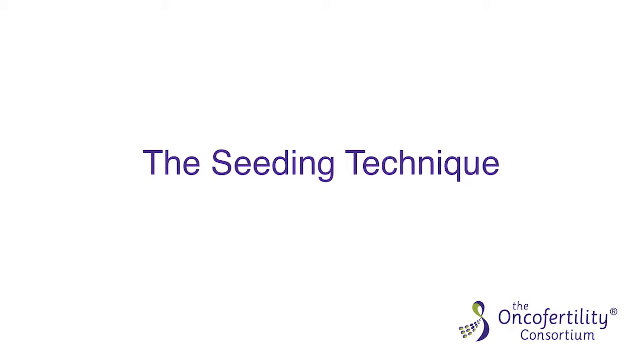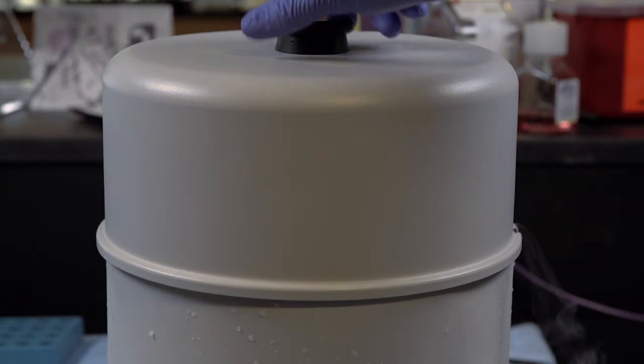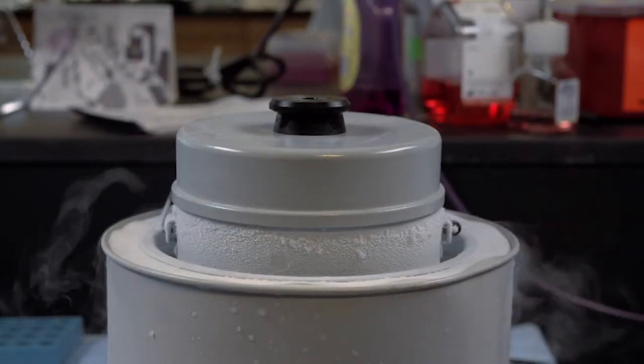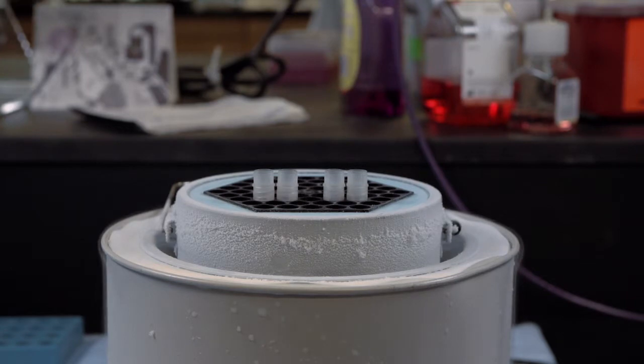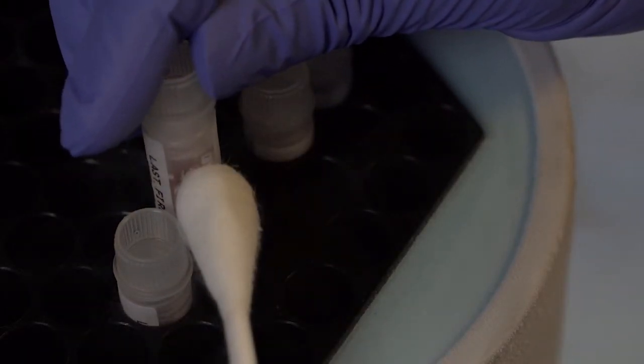The seeding technique is done manually and the easiest way to do this is to use a large cotton swab that has been immersed in liquid nitrogen. You can clearly see the seed this way and it can be done rapidly.